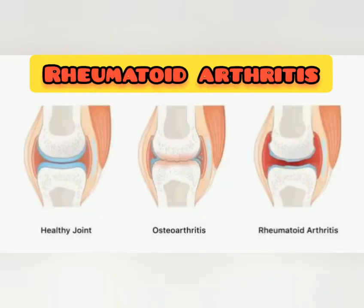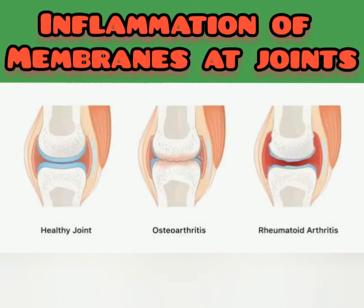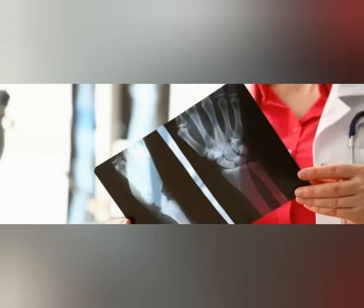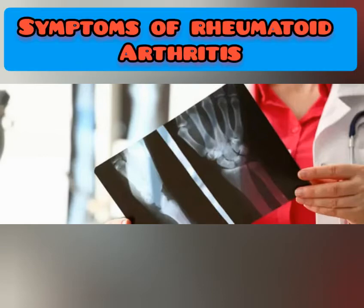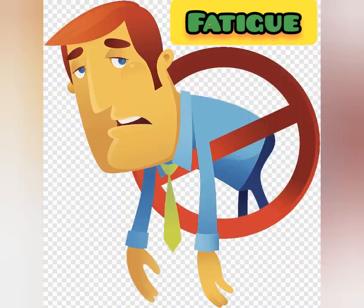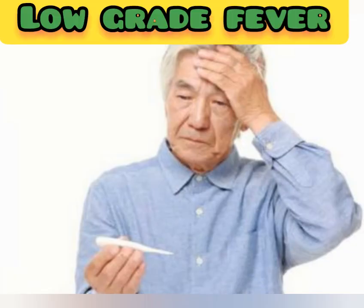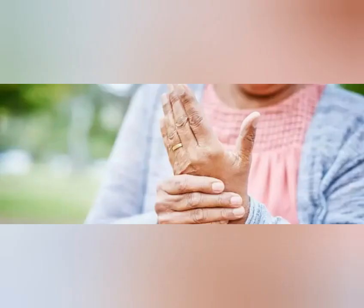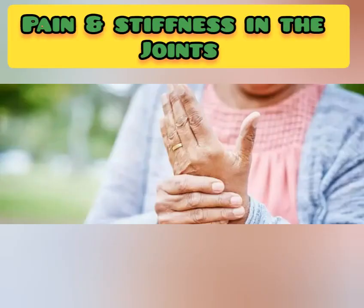The second type is rheumatoid arthritis, which involves inflammation of the membranes at the joints. The symptoms of rheumatoid arthritis include fatigue, low-grade fever, and pain and stiffness in the joints.